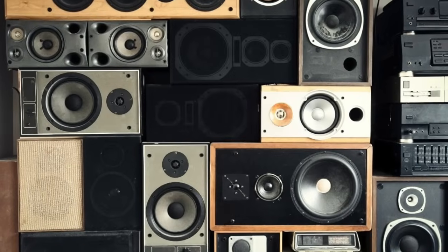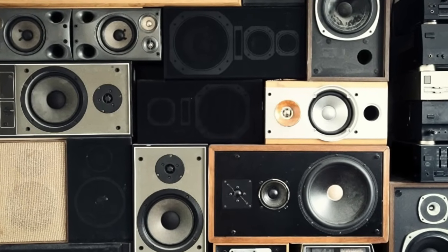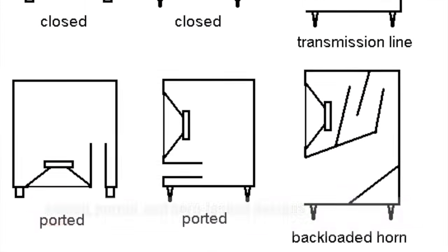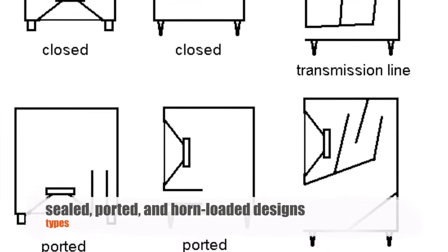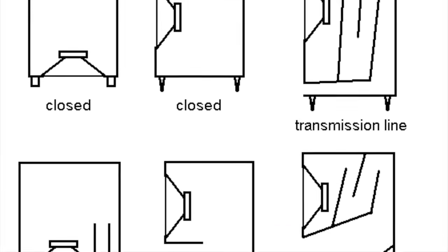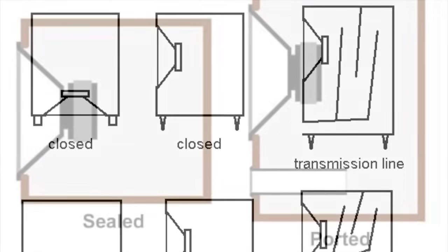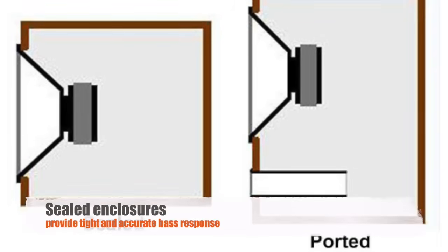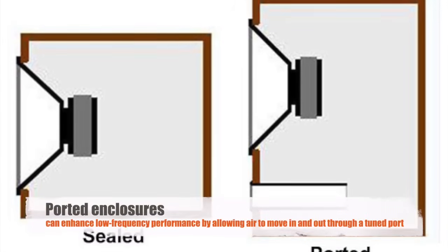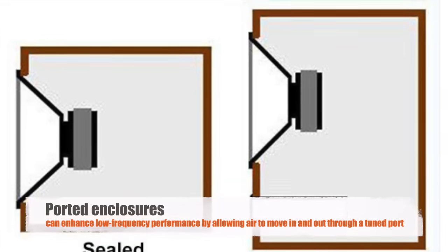Enclosures are designed to enhance the performance of the loudspeaker by optimizing the way sound waves are projected. There are various types of enclosures, including sealed, ported, and horn-loaded designs. Each type has its own advantages and is used in different applications based on the desired sound characteristics. For instance, sealed enclosures provide tight and accurate bass response, while ported enclosures can enhance low-frequency performance by allowing air to move in and out through a tuned port.